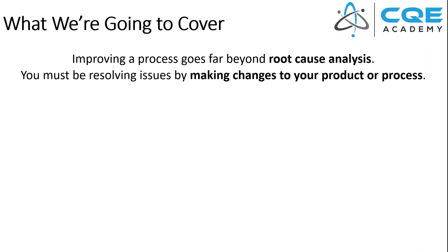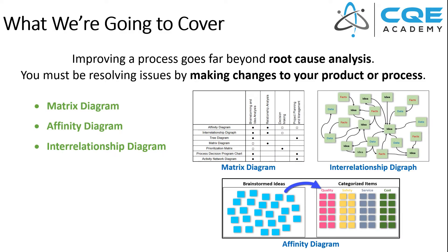I want to start by introducing the seven tools and spending just a minute talking about why we use them. The seven QC tools were originally developed for root cause analysis, and Ishikawa said that 95% of problems can be solved by these seven tools. But over time, as problems and processes became more complex, the need for new tools arose. Those original tools also don't help you make changes to your product or process once you know the root cause. These first three tools — the matrix diagram, the affinity diagram, and the interrelationship diagram — are what I call relationship analysis tools.